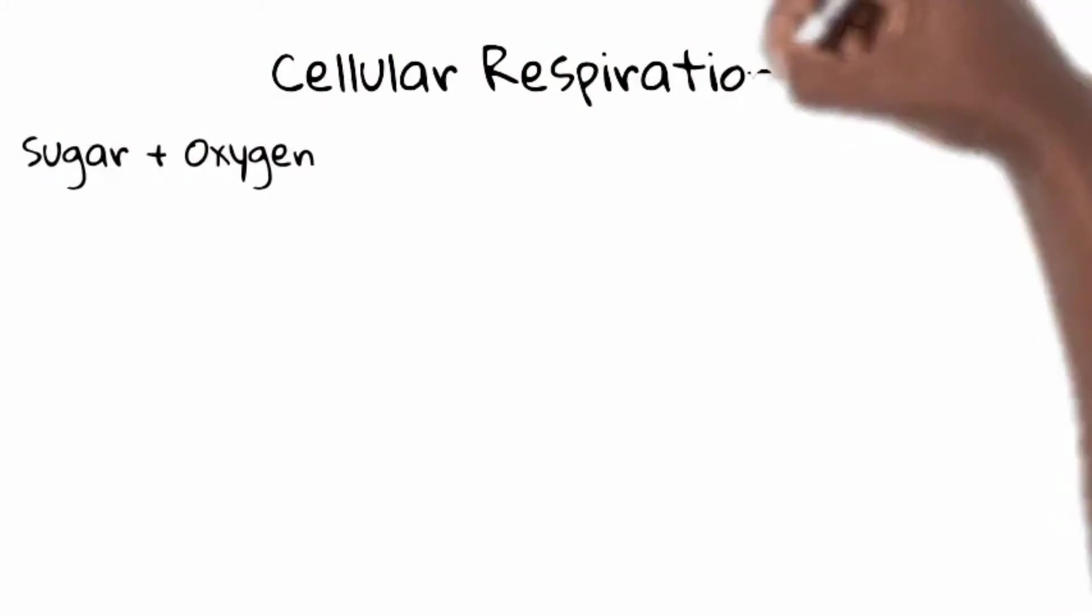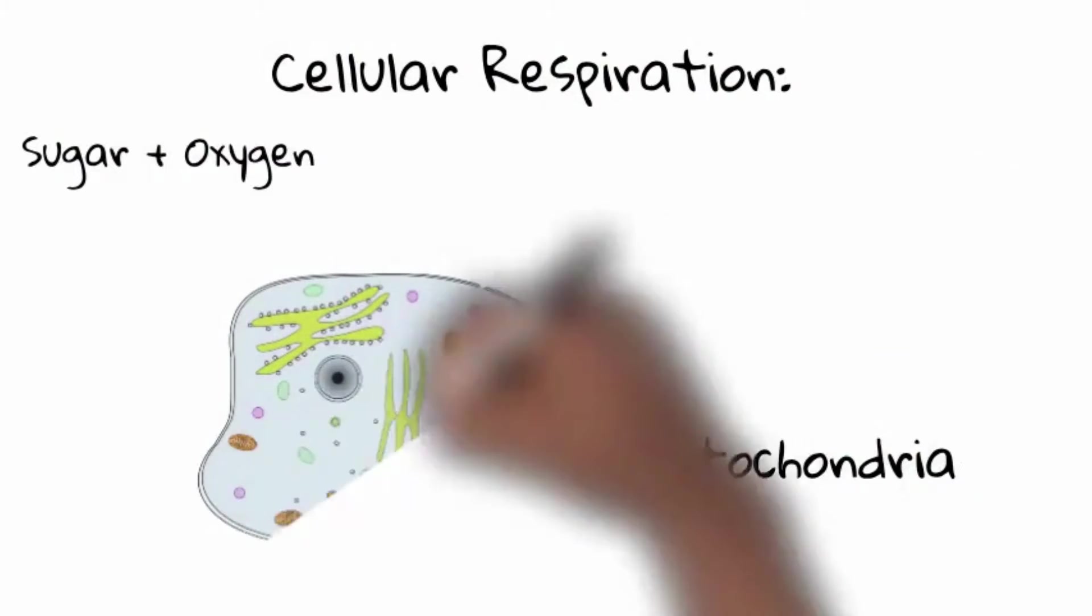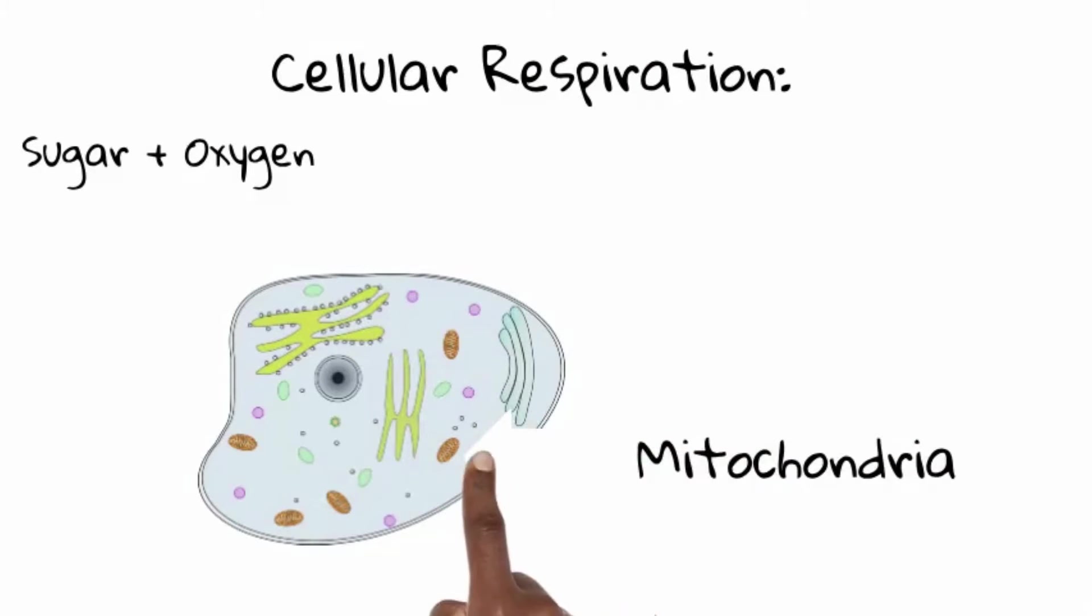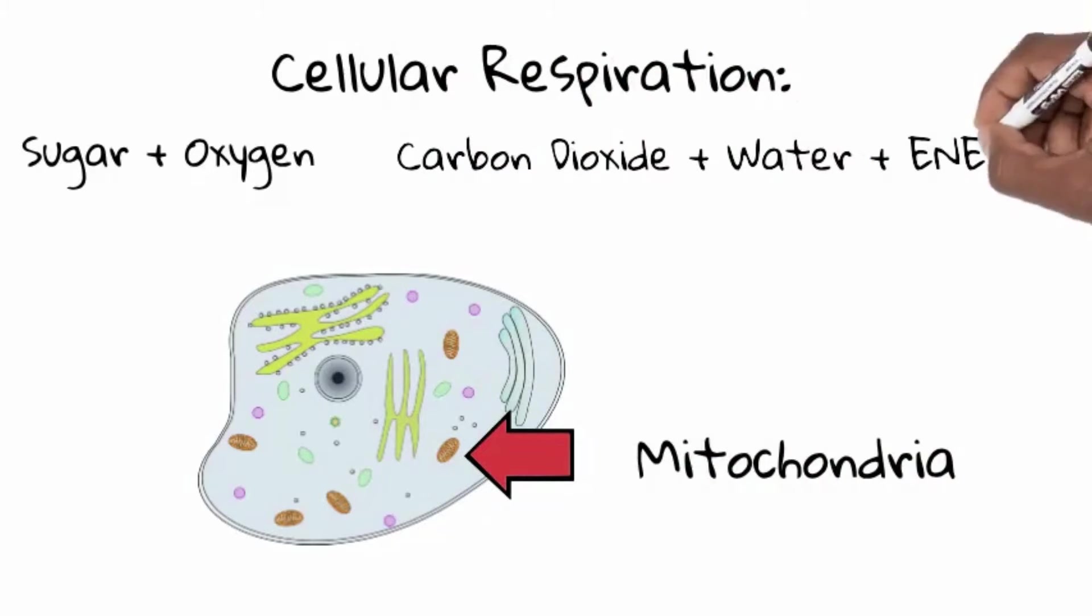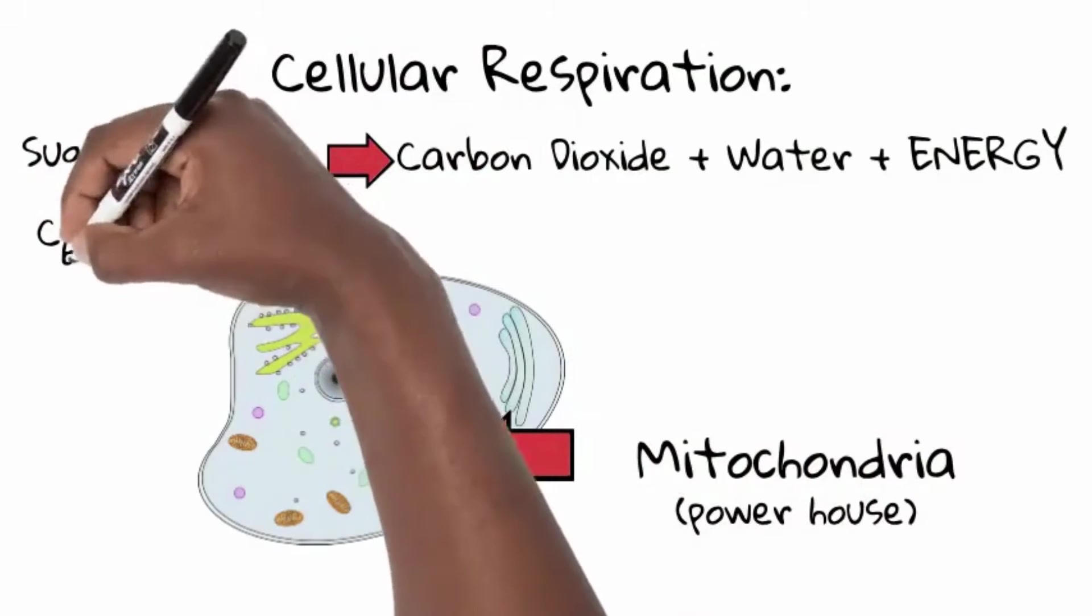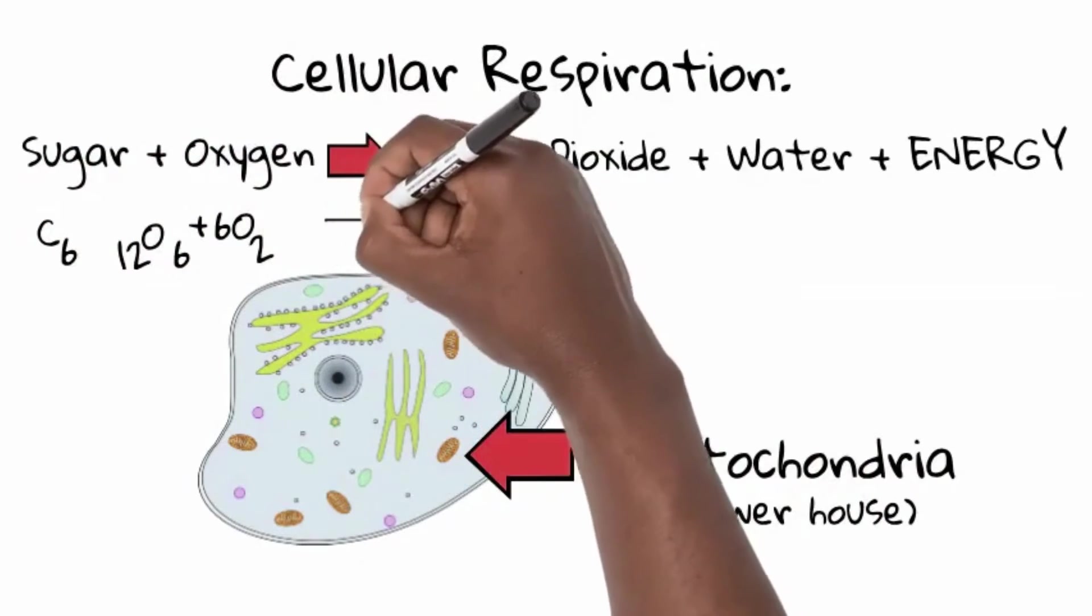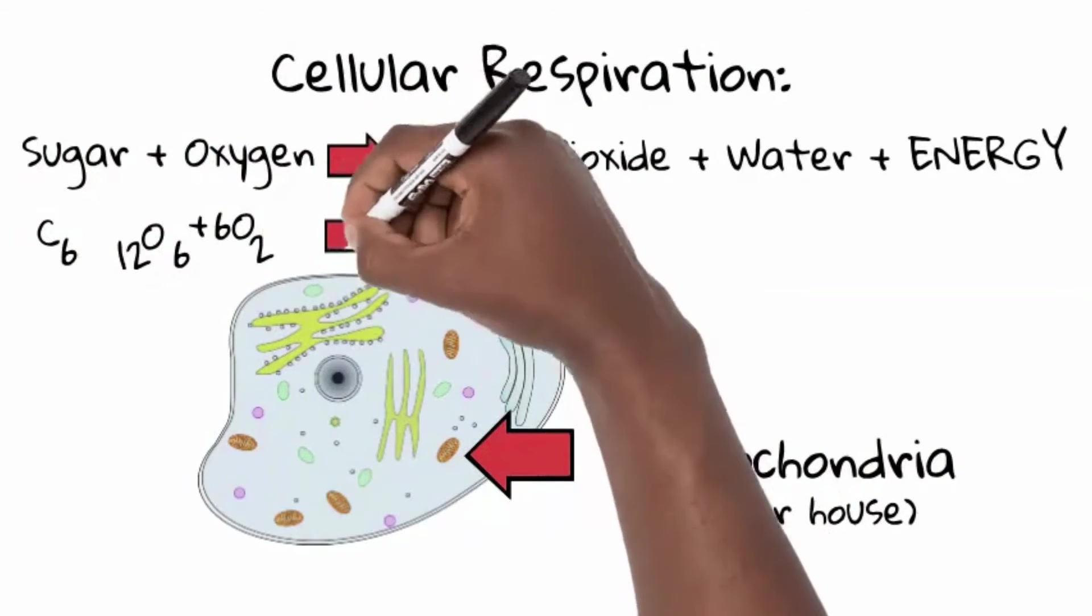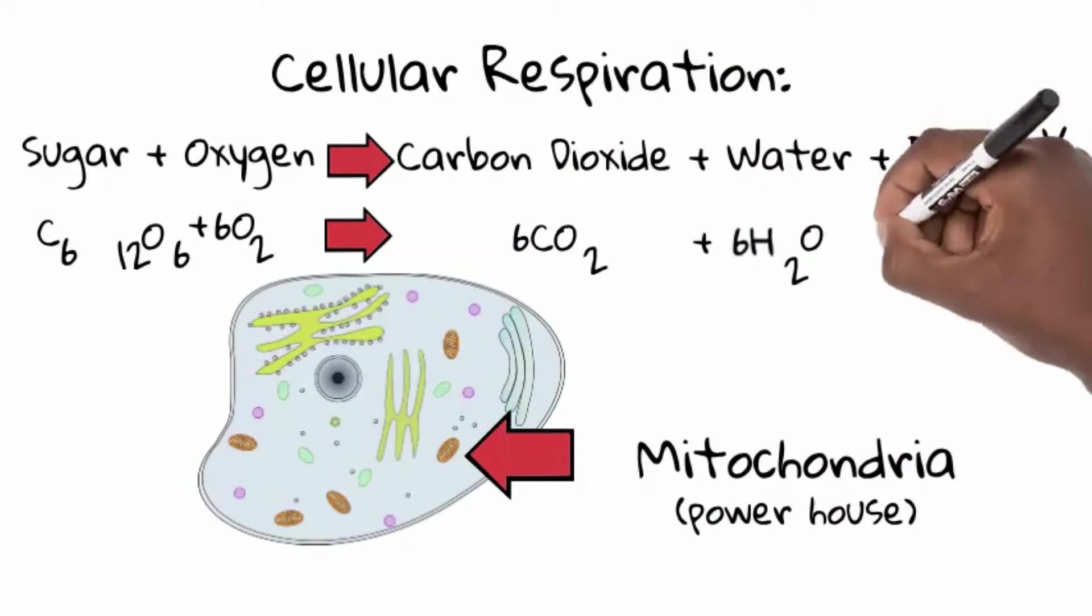Mitochondria aid in a process called cellular respiration. But what's that? Well, this is how it works: our foods contain stored chemical energy in the sugars we eat. Now when these sugars react with the oxygen we breathe, energy trapped in the sugars is released, among other things like carbon dioxide and water. All this takes place within its inner membrane, protected by an outer membrane.